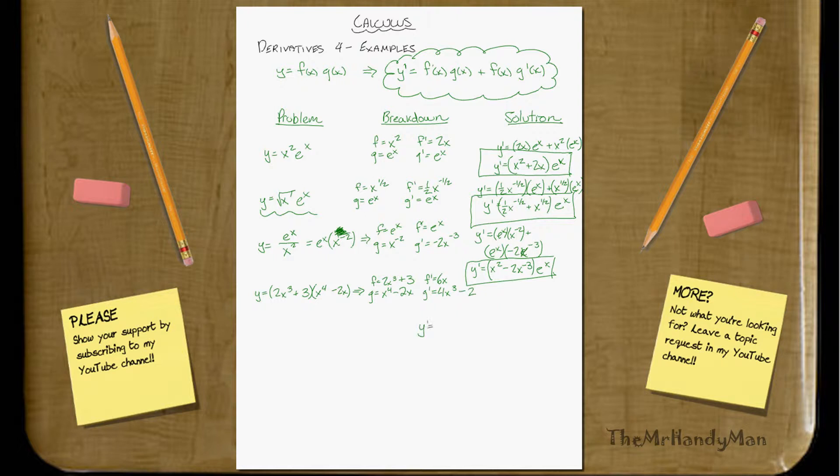g is equal to x to the 4th power minus 2x. g prime is equal to 4x cubed minus 2. So simply, y prime is going to equal f prime times g, which is x to the 4th power minus 2x, plus the exact opposite way, which is going to be f, 2x cubed plus 3, times 4x cubed minus 2.